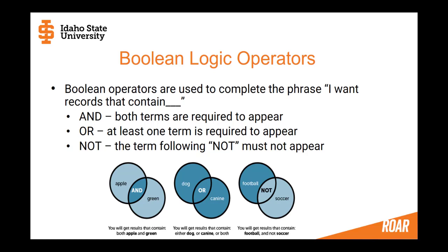If you use the operator NOT — this isn't something you'll do often — it can subtract things from your search. The example is football NOT soccer: I want records about football, but I do not want them to have the word soccer anywhere. NOT is dangerous and you shouldn't use it much. A useful case is when a word means two different things — the classic example is searching nursing. If I search nursing, I probably mean the profession, but I'll get records about breastfeeding because nursing mothers is another term for that. So I can search nursing NOT mothers to subtract the records I don't want.